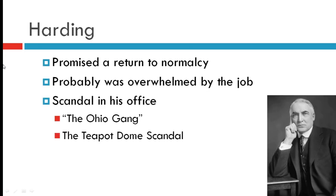Warren G. Harding is considered one of the worst presidents we've ever had. He had difficulty making decisions — not good or bad ones, just no decisions. He was probably overwhelmed by the job. Unfortunately, he had quite a bit of scandal involving his cabinet, known as the Ohio Gang — mostly friends he played cards with. He was described as a 'good old boy,' perhaps chosen for the presidency in a smoke-filled room. The most famous scandal was the Teapot Dome scandal, in which Secretary of the Interior Albert B. Fall illegally leased public land and profited from it.